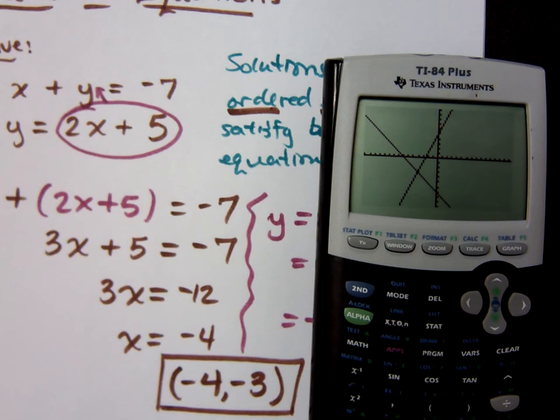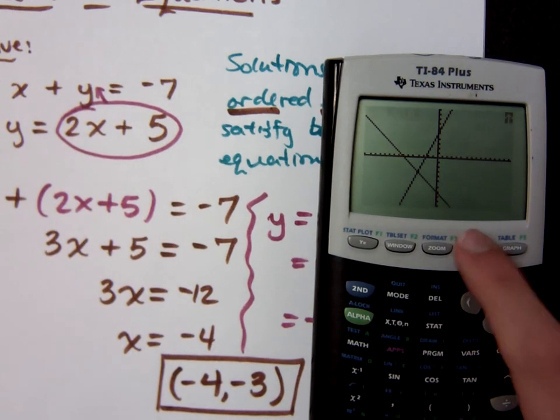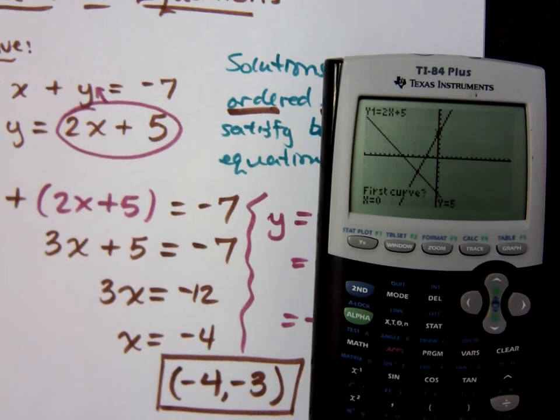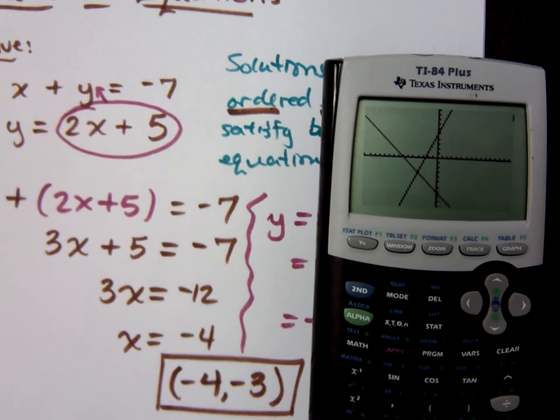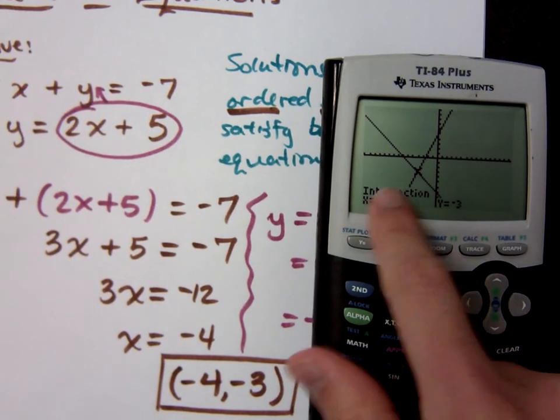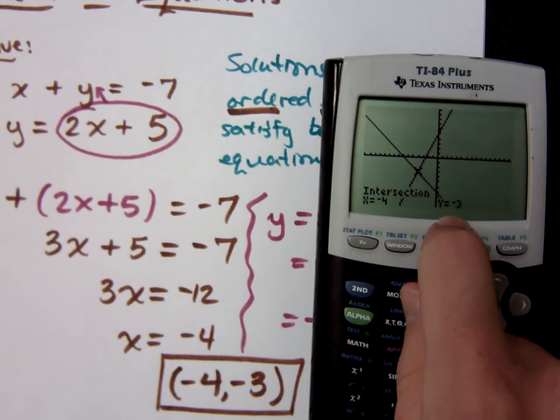Now, how do you use your graphing calculator to come up with this? Go to second, calculate, and do the intersection. How many intersection points do we have? One. So act like a little monkey and just press the enter button three times. Negative four and negative three is my intersection point.